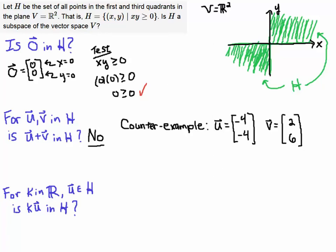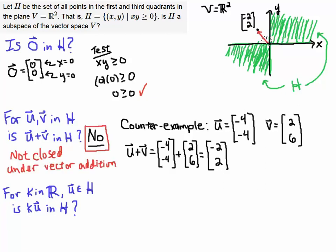Watch what happens when I add these two vectors together. U plus V is, I have (-4, 4) plus (2, 6), so -4 plus 2 is -2, 4 plus 6 is 10... wait, -4 plus 6 is 2, and that gives me the vector (-2, 2). Now look, the vector (-2, 2) is here in this quadrant, which is not in the set H. It has to be in these two quadrants.